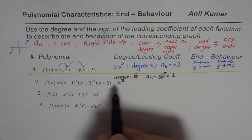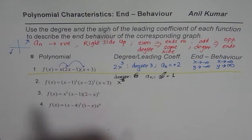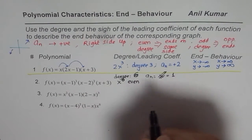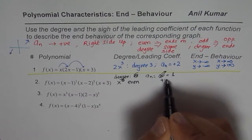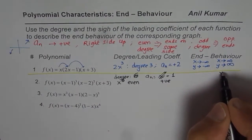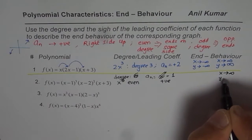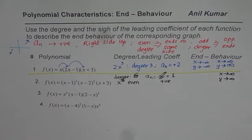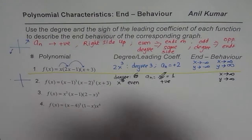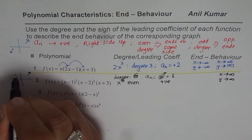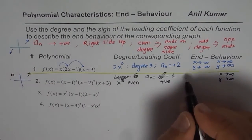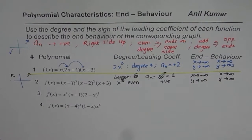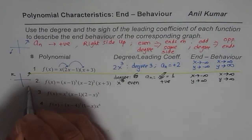So degree is even and the leading coefficient is positive. Positive means right side up, and even means we are looking for same ends. So when x approaches infinity, y approaches infinity; and when x approaches negative infinity, y also approaches positive infinity — not negative infinity.